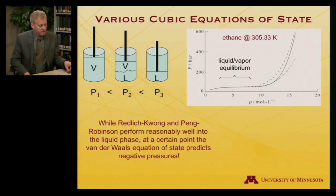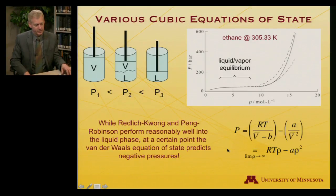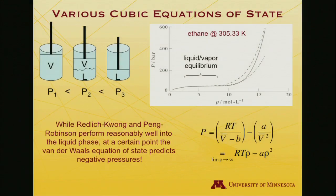And I'm showing you the behavior of the Redlich-Kwong and the Peng-Robinson equations of state. They don't do too badly. I'm not showing the Van der Waals equation of state because it actually does bizarre things. And, in fact, it predicts negative pressures.